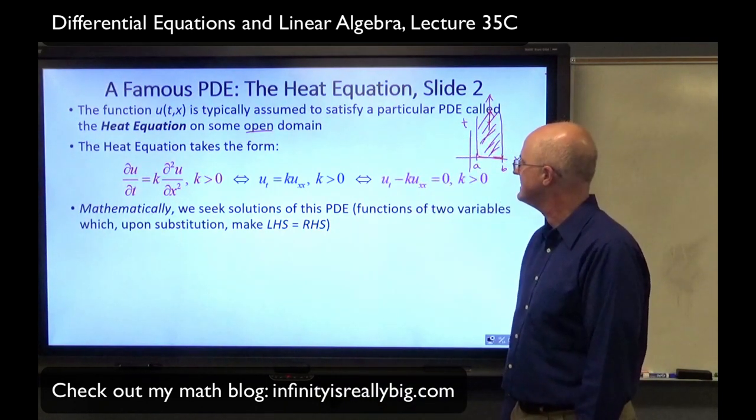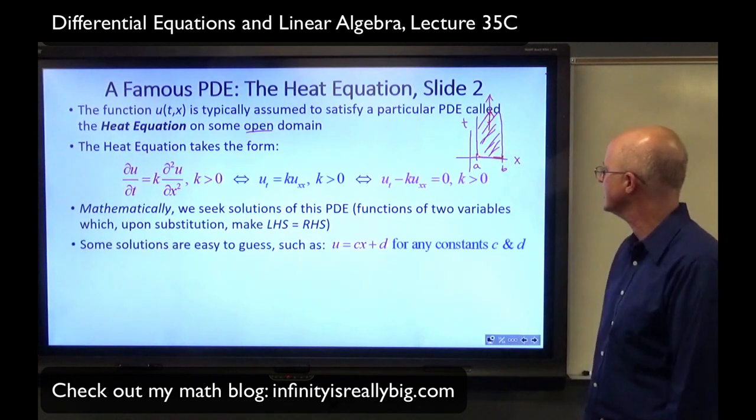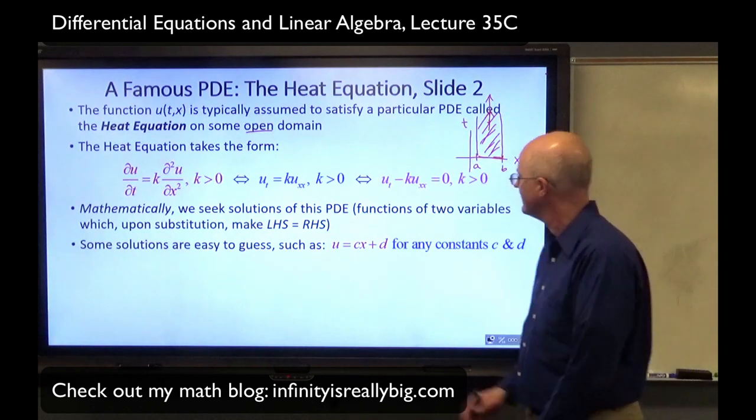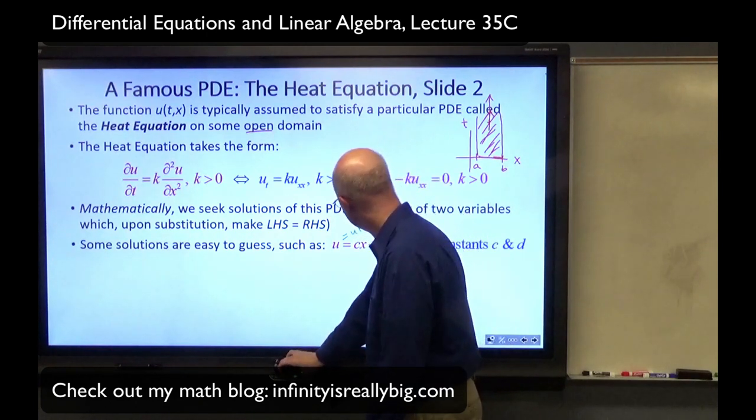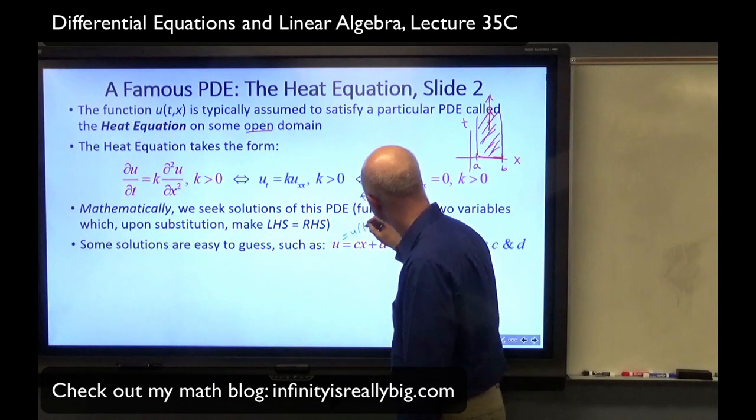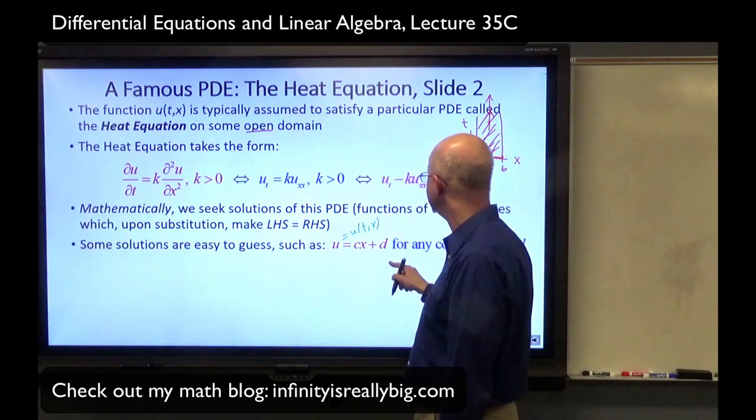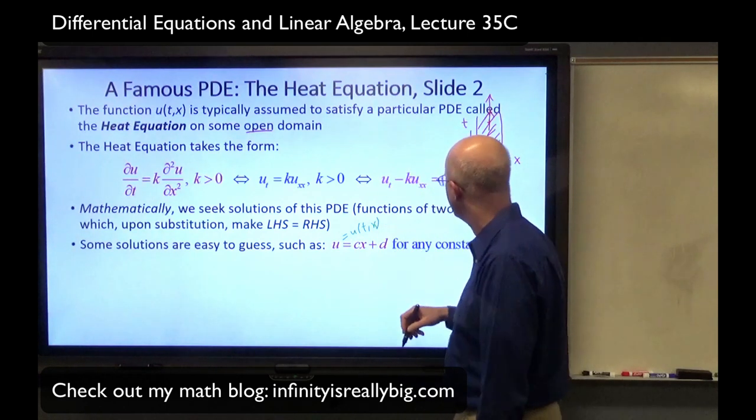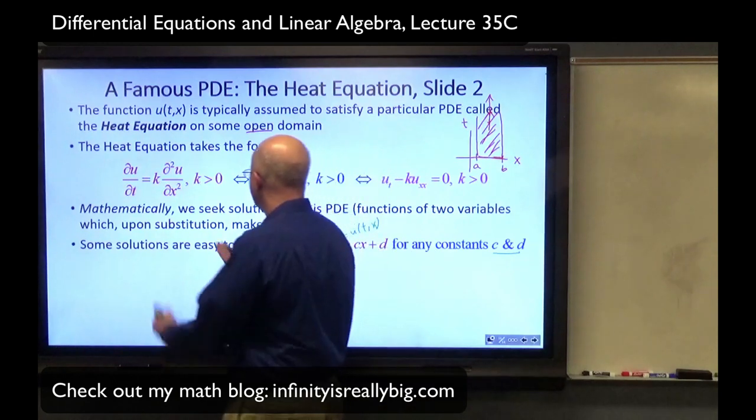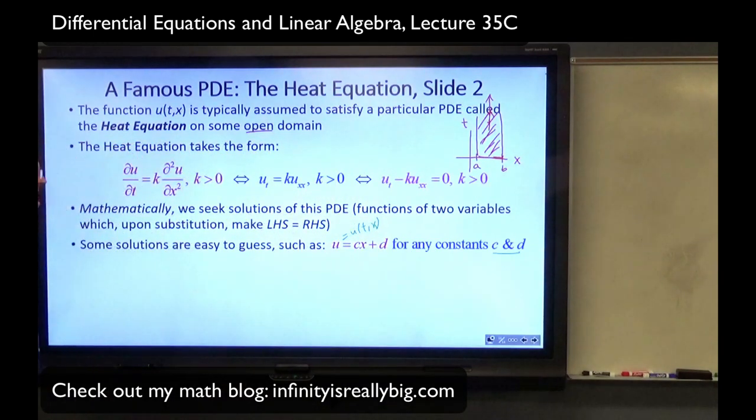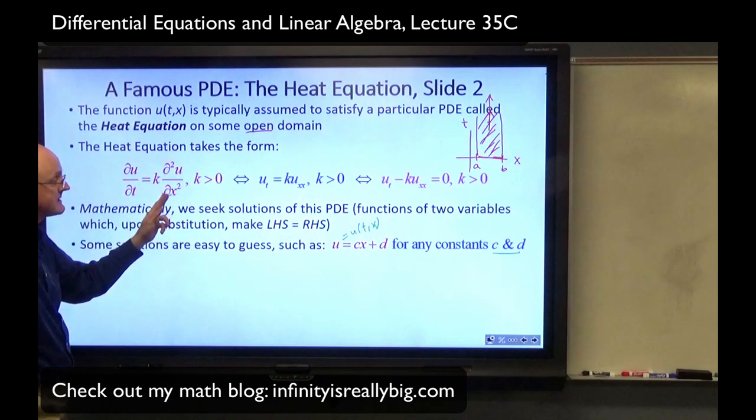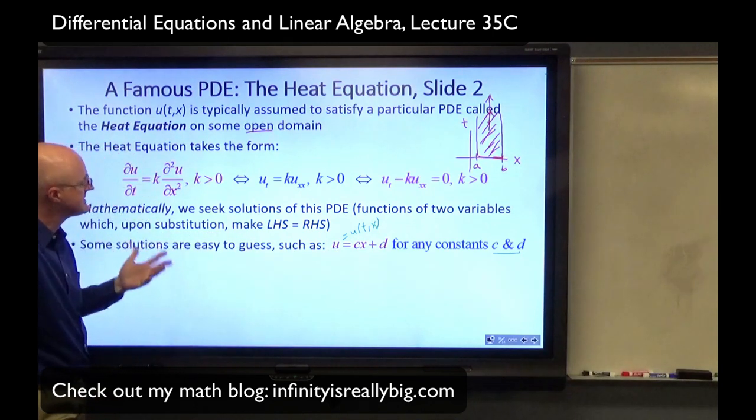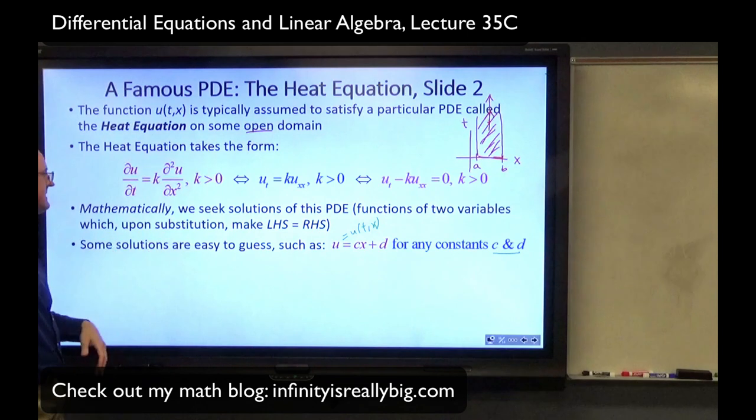Mathematically, we seek solutions of this PDE, functions of two variables, which upon substitution make the left-hand side equal right-hand side, just like with ODEs. Can we think of any solutions? Simplest solutions I can think of are linear functions of X. U equals U of TX, but it only depends on X, no T's. For any constants C and D, that'll work, because it'll make the left- and right-hand sides both zero for all T and X. This will work over the entire X, T plane. This derivative, since there's no T's, will be zero. This derivative, since it's a second derivative of a linear function in X, will also be zero.